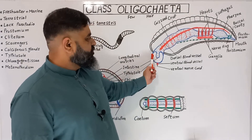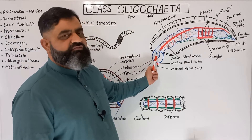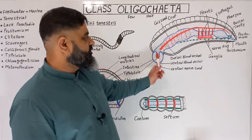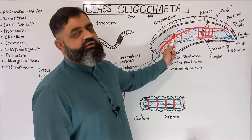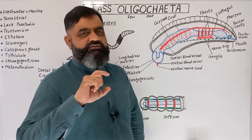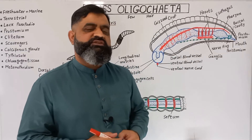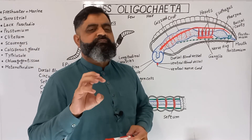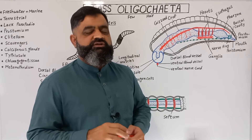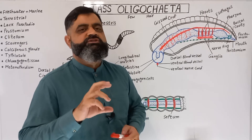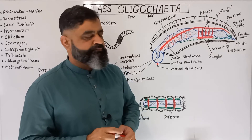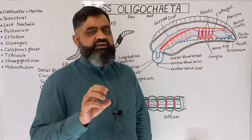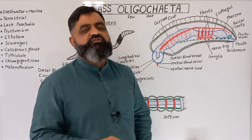The intestine also contains an invagination known as the typhlosole, which increases the surface area for absorption and digestion of food. On the dorsal side of the gut there are some cells known as chloragogen tissue, which function like a liver and help excrete nitrogenous waste from the food. Near the heart there are also structures known as calciferous glands, which help to remove calcium from the food.